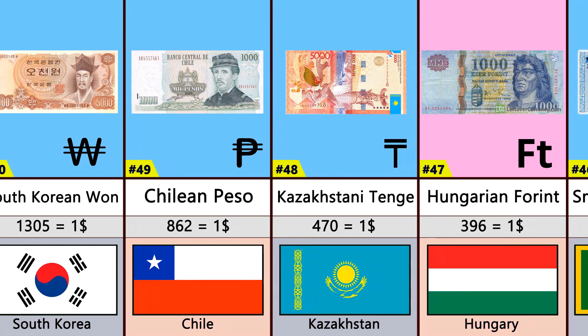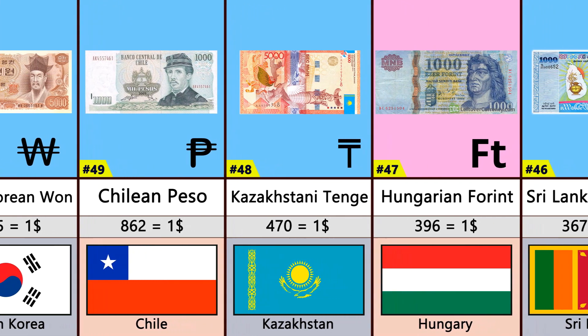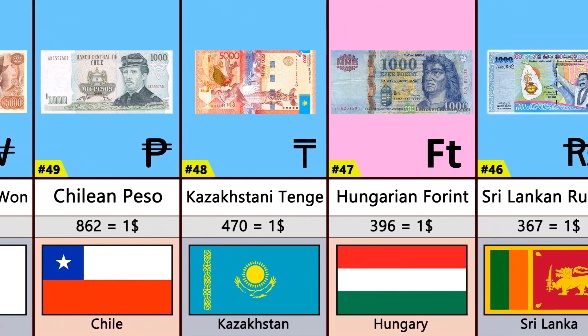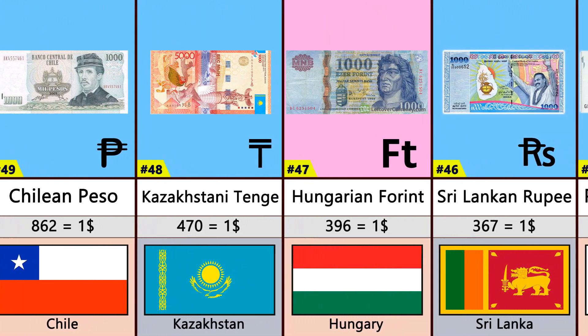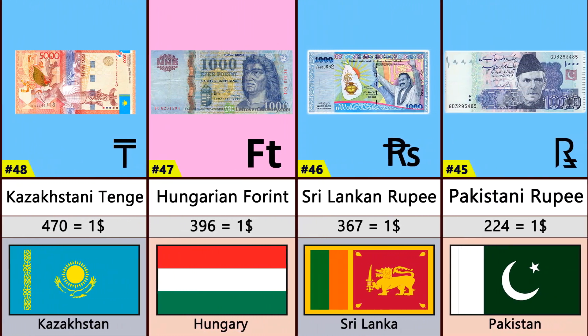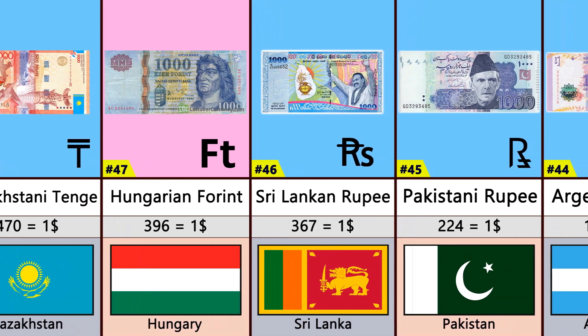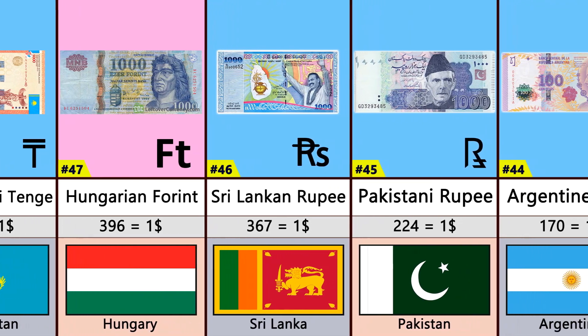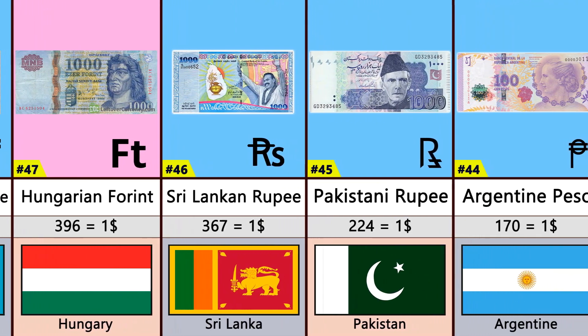Number 47: Hungarian Forint. Number 46: Sri Lanka Rupee. Number 45: Pakistani Rupee. Number 44: Argentina Peso.